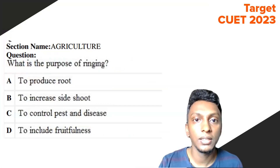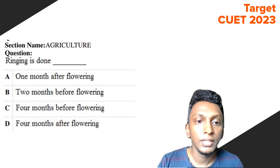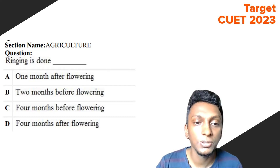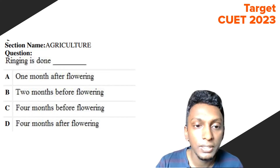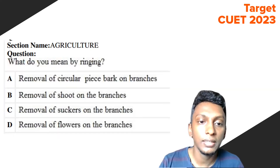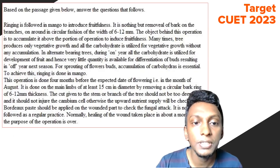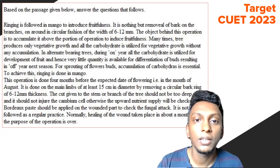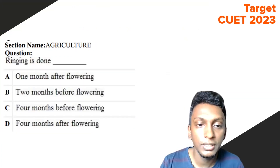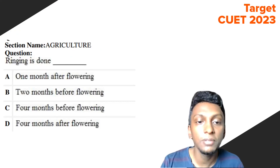Question 9: When is ringing done? The options are: one month after flowering, two months before flowering, four months before flowering, and four months after flowering. The passage states this operation is done four months before the expected date of flowering, that is the month of August. So Option C — four months before flowering — is the right answer.